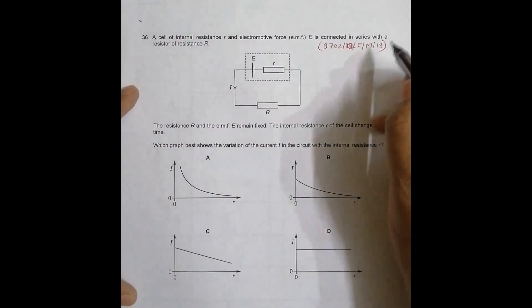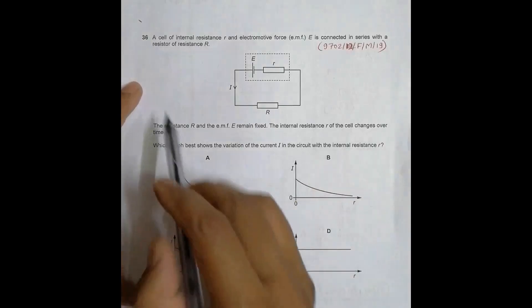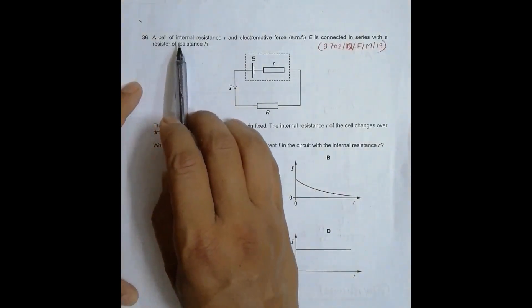Hello folks, this is a fresh question. It is a February-March season 2019 paper 1-2, and the question number is 36. It is concerned with the chapter of current electricity.